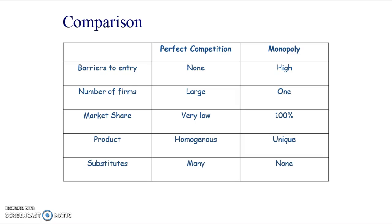In perfectly competitive markets, because the products that this particular firm is selling are homogenous to all the other firms that are in the same market, there are many substitutes, whereas because the monopoly's product is unique, there are no substitute products.